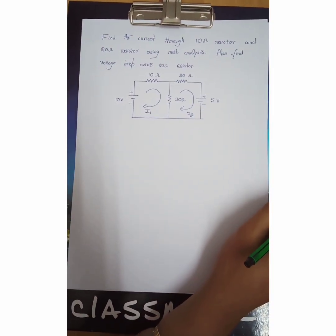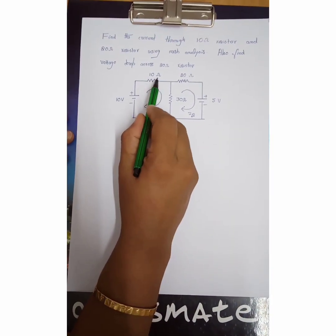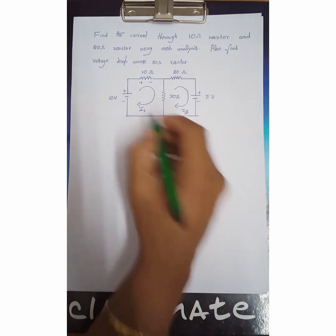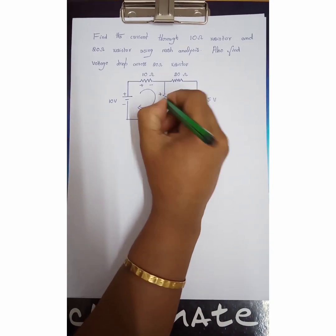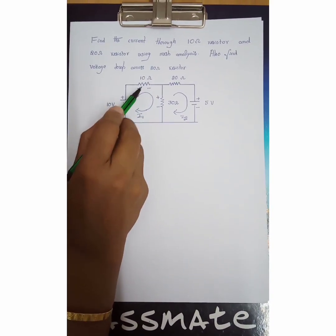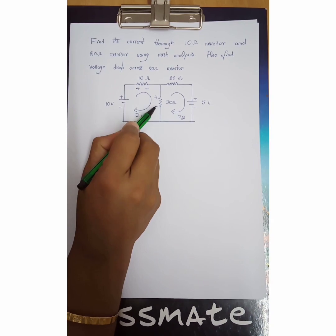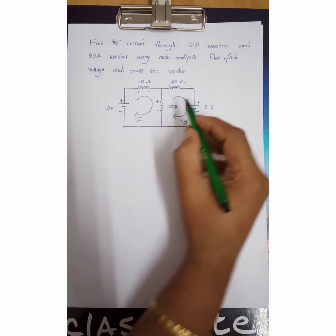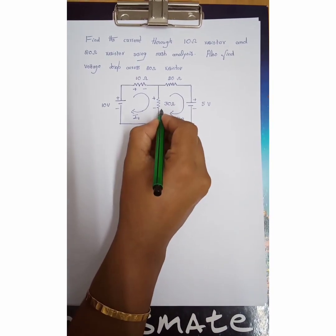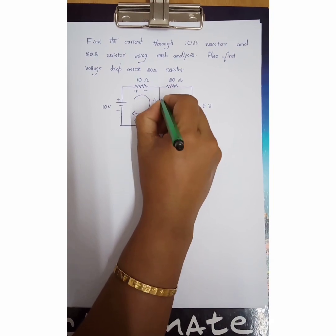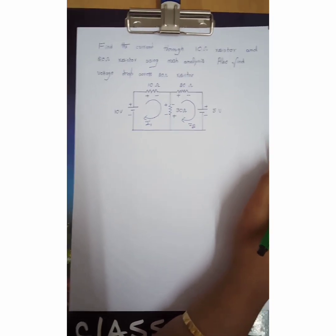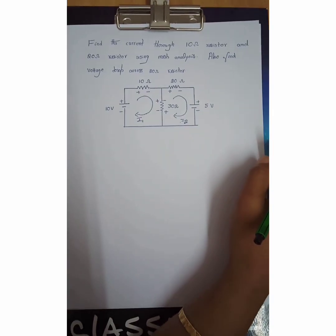Whenever current flows through the 10 ohm resistor in this direction, I mark the polarity plus-minus here, and for the 30 ohm, plus-minus like this. Tracing in the clockwise direction: for 10 ohm, current enters here and leaves here, so plus-minus. For 30 ohm, enters here, leaves here, so plus-minus for the first loop. Similarly, for the second loop, current I2 enters the 30 ohm terminal — plus here, minus here — and for 20 ohm, plus-minus. This is the second step of marking all the polarities.